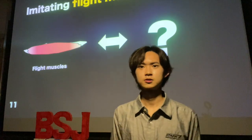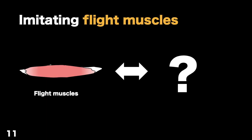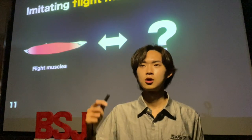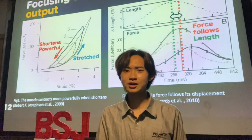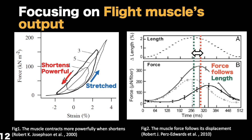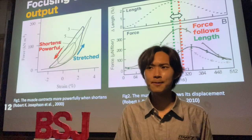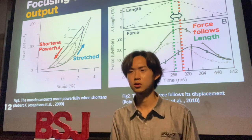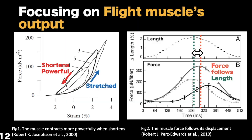Regarding the flight muscles, that was a challenge because the stretch activation property is poorly understood. So we approached it by imitating the mechanical output of flight muscles. On the right figure you can see the relationship between fly muscle force and its displacement — it looks like a banana. That means when it is stretched the muscle force goes up, and the more powerfully it is shortened, the more powerfully it contracts. On the right figure you also see the muscle force flow versus displacement.